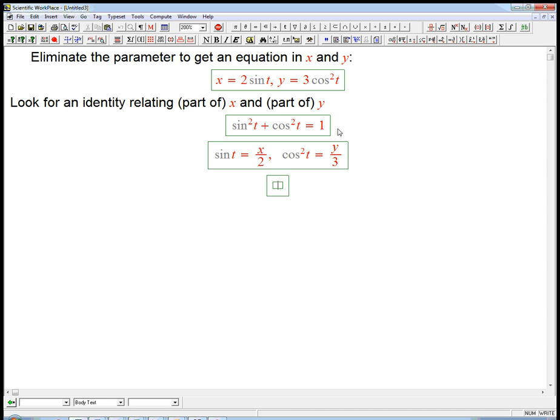Now I can plug those in. Now be careful, this gets squared and this wasn't squared, so this is x over 2, x over 2 quantity squared plus, now just y over 3. y over 3 equals 1.